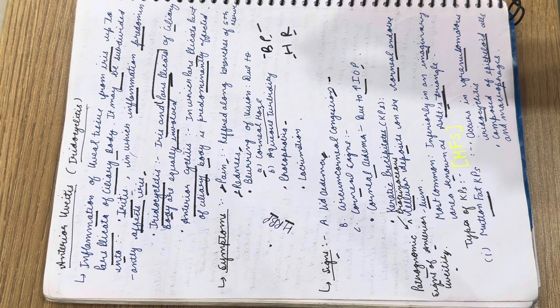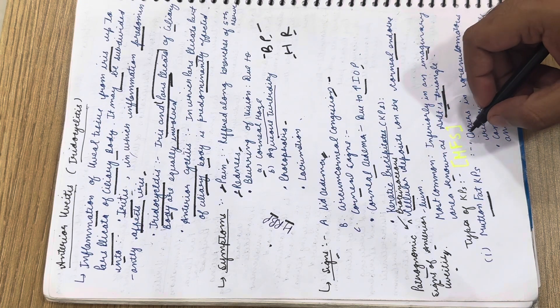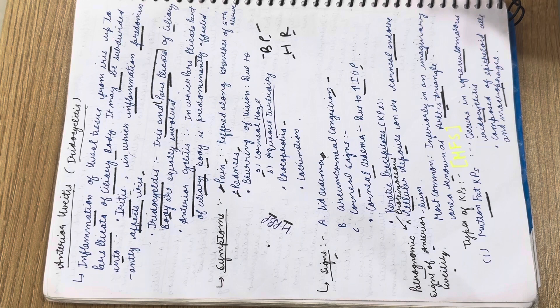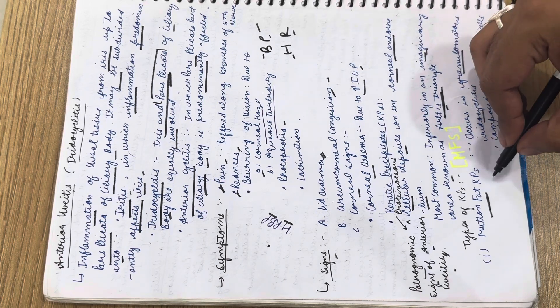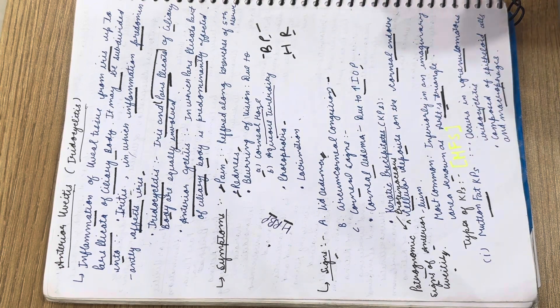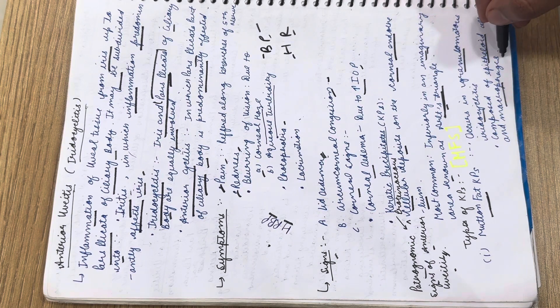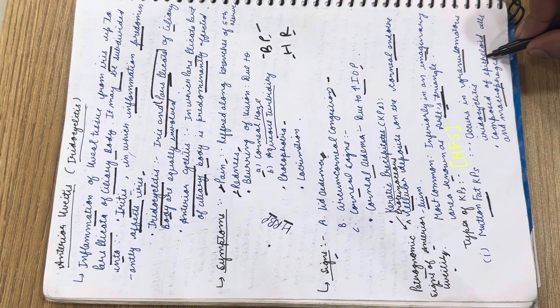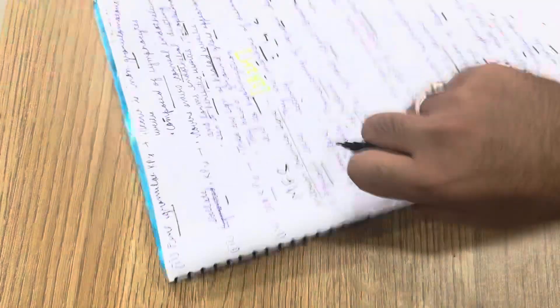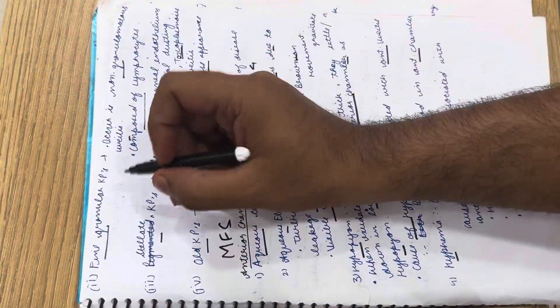To remember the types of KPs, use the mnemonic MFS. M stands for mutton fat KPs, seen in granulomatous iridocyclitis, composed of epithelioid cells and macrophages. F stands for fine granular KPs, which occur in non-granulomatous uveitis and are composed of lymphocytes.